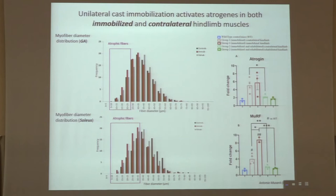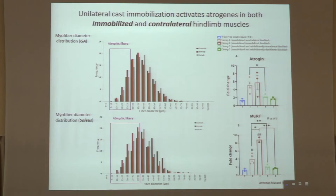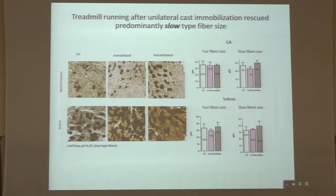Antonio Musaro in Rome analyzed the activation of atrogenes and found a significant increase of both atrogin-1 and MuRF-1 either in immobilized muscles (the red bar) and in the contralateral leg of the immobilized mice. This upregulation was rescued, returning to basal levels, in the rehabilitated legs, both contralateral and rehabilitated ones. We did not observe significant or major changes regarding fiber type — either fast or slow — in gastrocnemius and soleus. Rehabilitation induced a mild increase of myofiber atrophy of slow-type fibers in both muscles.